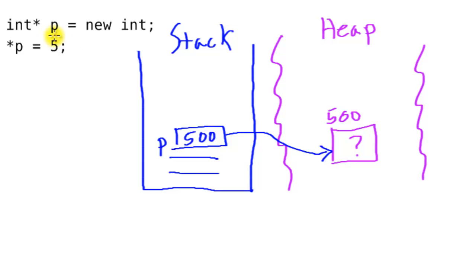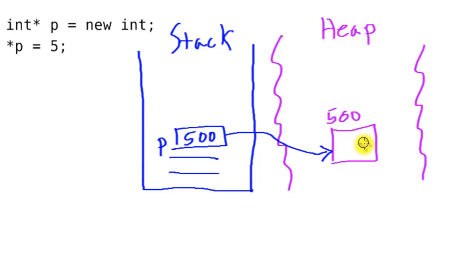Now that we have pointer p referencing the int on the heap, we can manipulate what that int holds. By dereferencing p on the left-hand side of an assignment, we get to that int on the heap and assign a value to it. In this case, we're assigning the value 5.